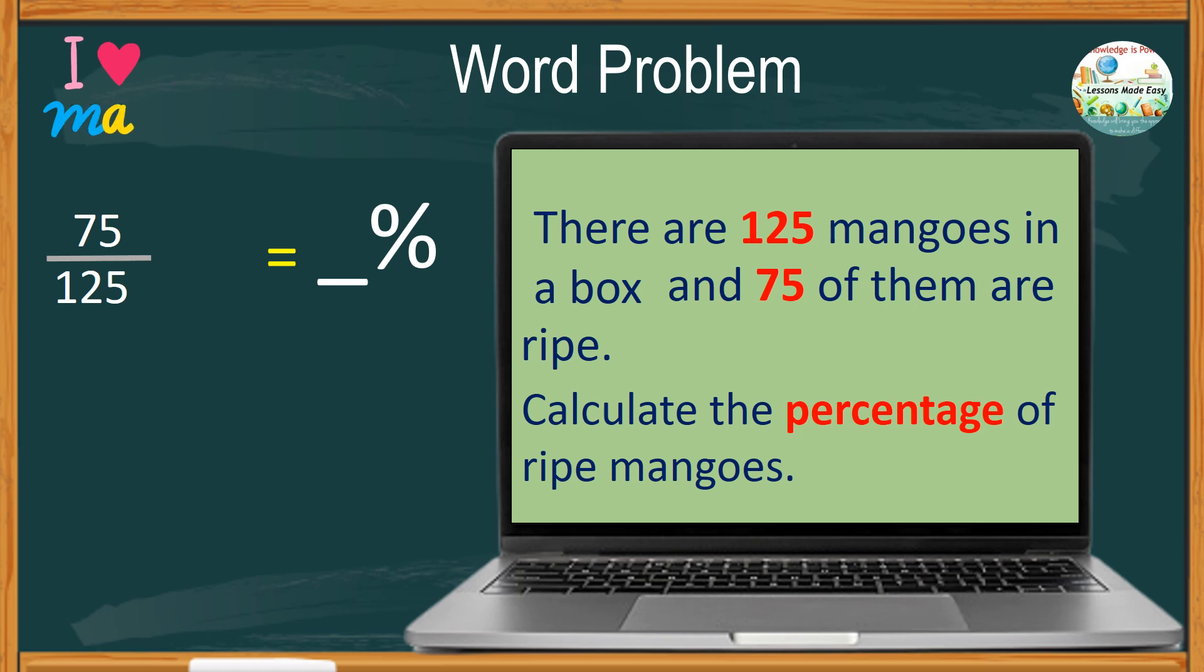This problem can be solved by just converting fraction into percentage by multiplying the fraction by 100. The fraction 75 over 125 can still be reduced into simplest form by dividing both numbers by 25, giving us an equivalent fraction of 3 over 5. Multiply by 100 with 1 as the denominator. We now have 300 over 5, or 300 divided by 5, which is 60.